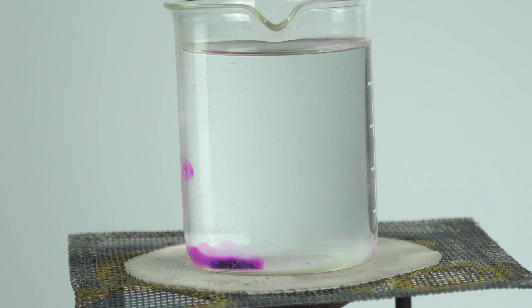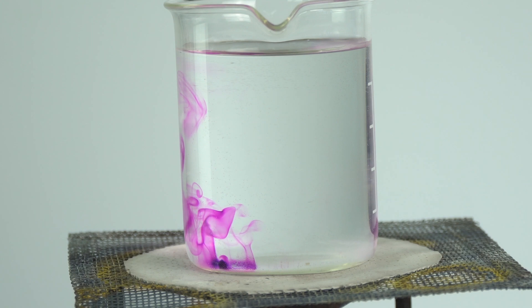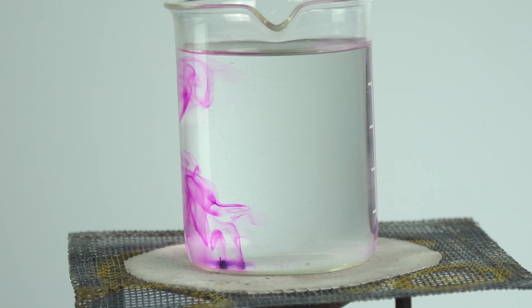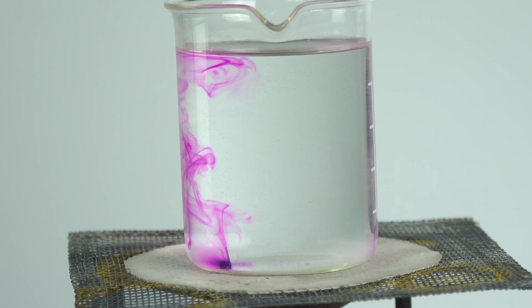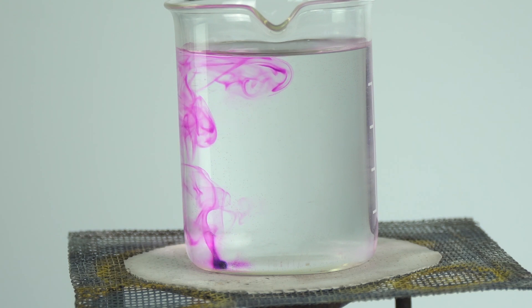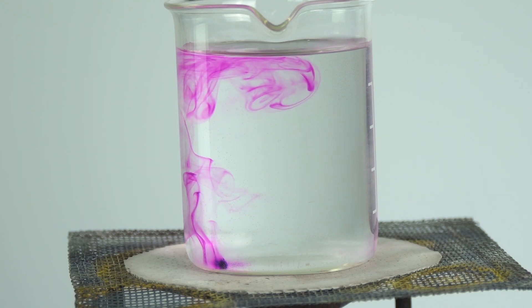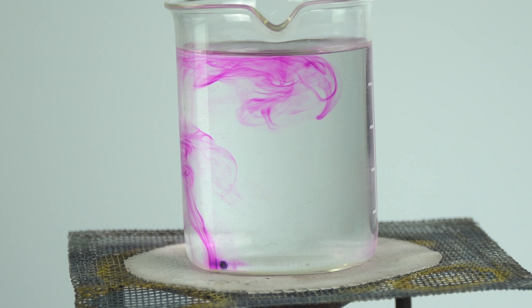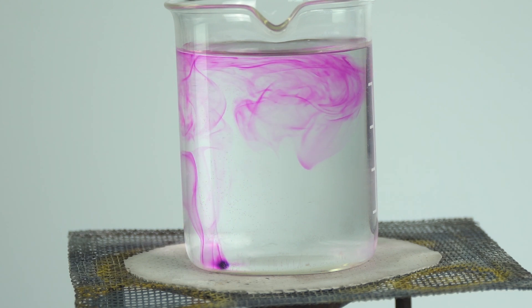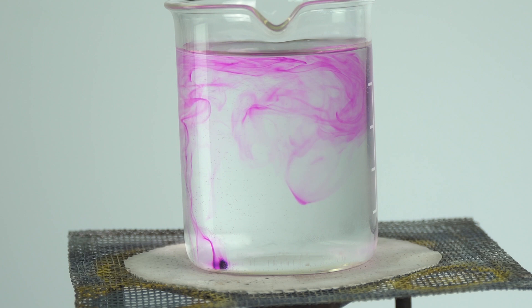We can now see how the water is rising up above that crystal. When it gets to the top we get this current where it maybe starts to move down the other side as well. What we now have inside the beaker is a convection current.